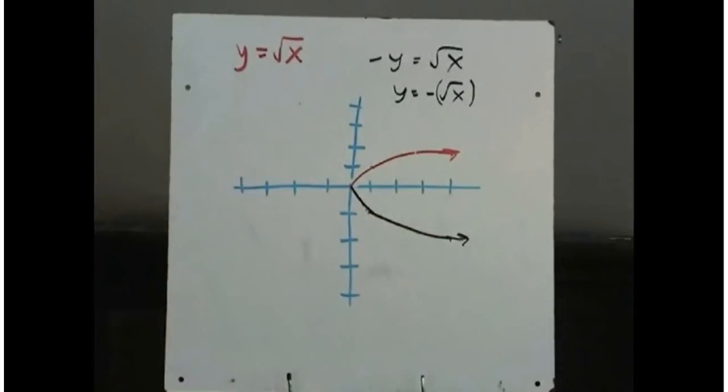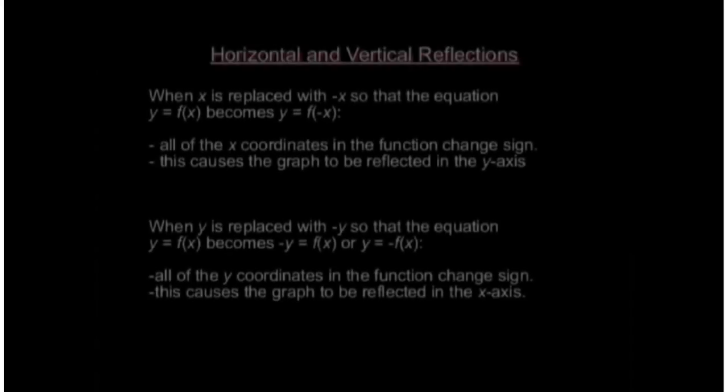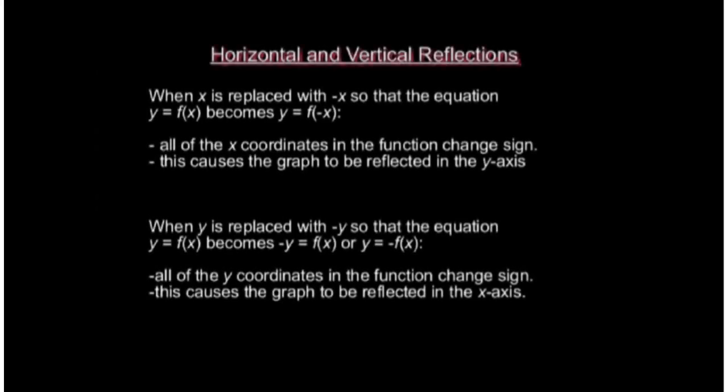So let's review what happens when we replace x with minus x and y with minus y. When x is replaced with minus x, so that the equation y equals f of x becomes y equals f of minus x, all of the x coordinates in the function will change sign. This means if x was minus 2, it'll become positive 2. And if x say was positive 5, it'll become negative 5. And this will cause the graph to be reflected in the y axis.